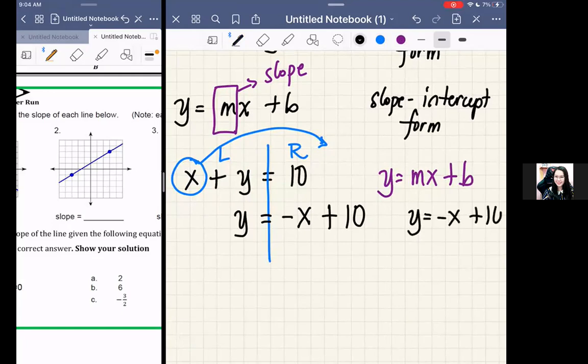Therefore our slope-intercept form is y equals negative x plus 10. Now, where is m there? Here, y has negative 1x plus 10. Therefore m equals negative 1. That's it.